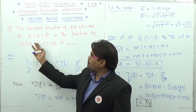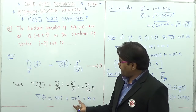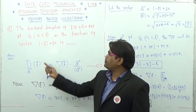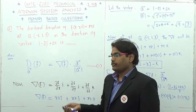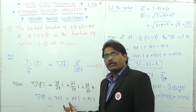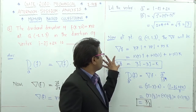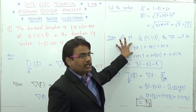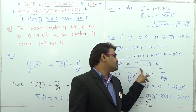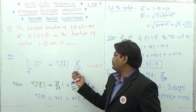Now let me find the gradient at the given point (-1, 1, 3). Here x = -1, y = 1, z = 3. Substituting these values: yz = 1×3 = 3, xz = -1×3 = -3, and xy = -1×1 = -1. So the gradient of the function at that point is 3i - 3j - k.